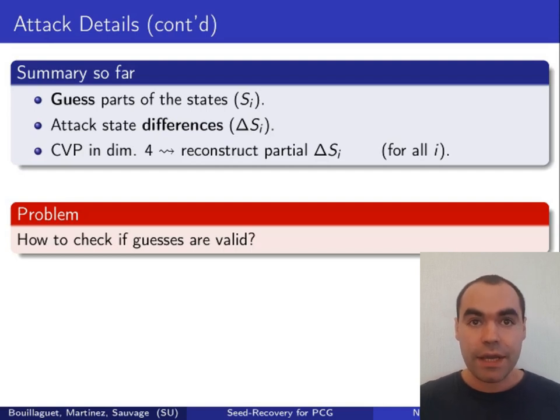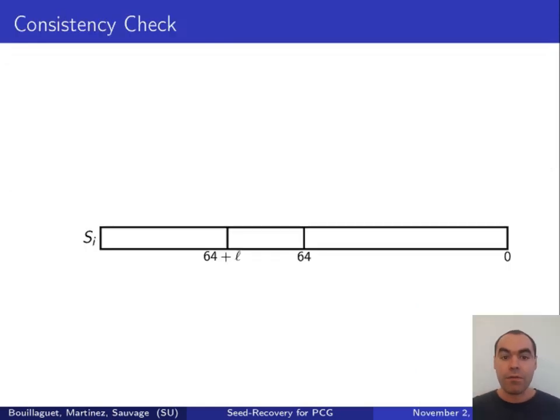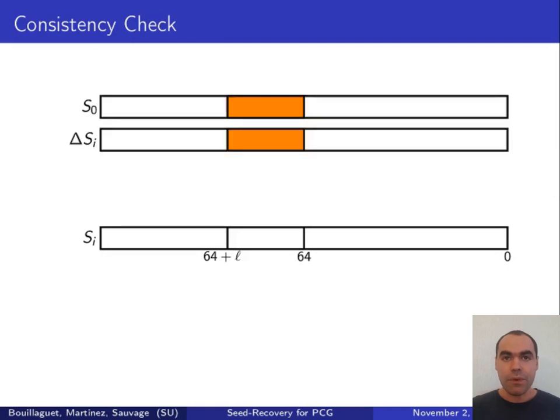Now the problem we have is to check if the guesses are valid, because we are no longer rebuilding the actual full state, and we cannot generate the output directly. It turns out that we have a powerful consistency check.